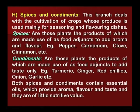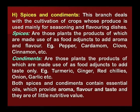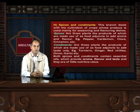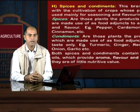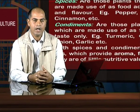Now let us discuss spices and condiments. This branch deals with the cultivation of crops whose produce is used mainly for seasoning and flavoring dishes. Spices are those plants whose products are used as food adjuncts to add aroma and flavor — examples are pepper, cardamom, clove, cinnamon, etc. Condiments are those plants whose products are used as food adjuncts to add taste only — examples are turmeric, ginger, red chilies, onion, garlic, etc. Both spices and condiments contain essential oils which provide aroma, flavor and taste, and they are of little nutritive value.